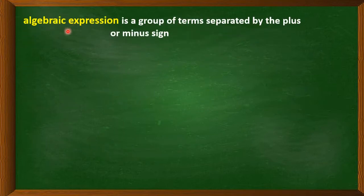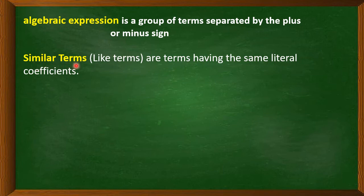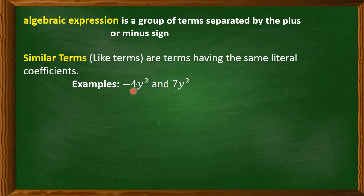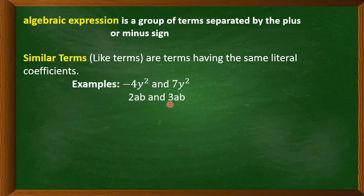Next, about algebraic expressions — a group of terms separated by the plus or minus sign. Similar terms, also called like terms, are terms with the same literal coefficients. For example, negative 4y² and 7y² are similar terms — they have the same literal coefficient, y². Another example: 2ab and 3ab are similar terms; they have the same literal coefficient, ab.